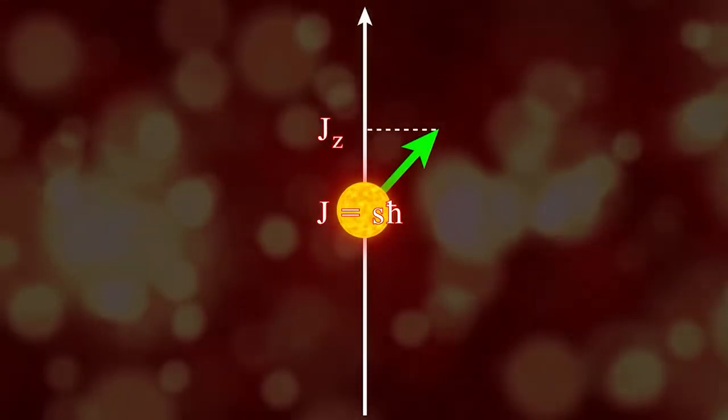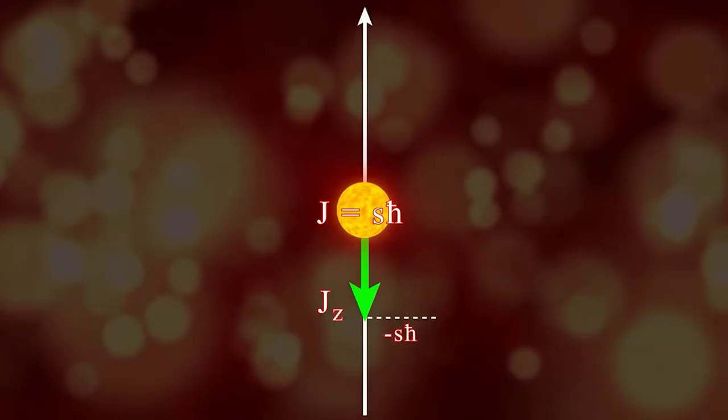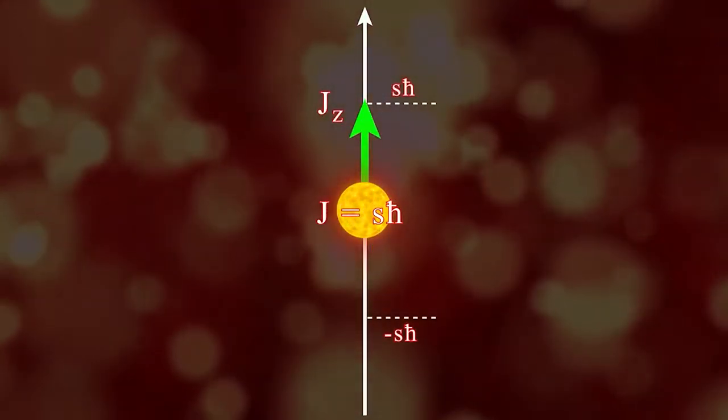This projection value can range from minus s to s times the Planck constant, in the increments of one Planck constant.